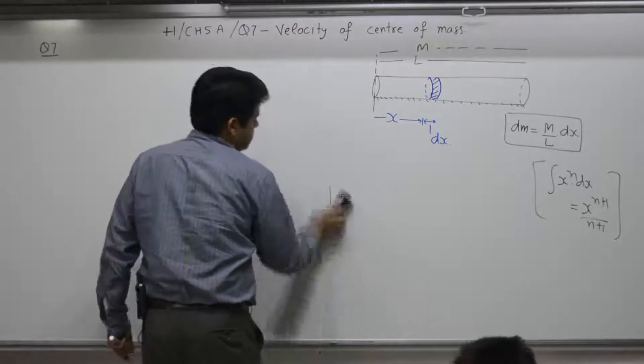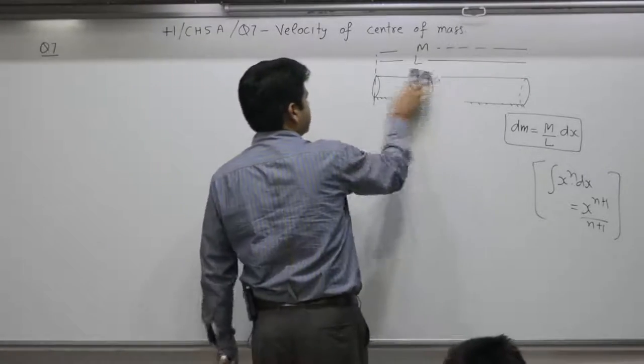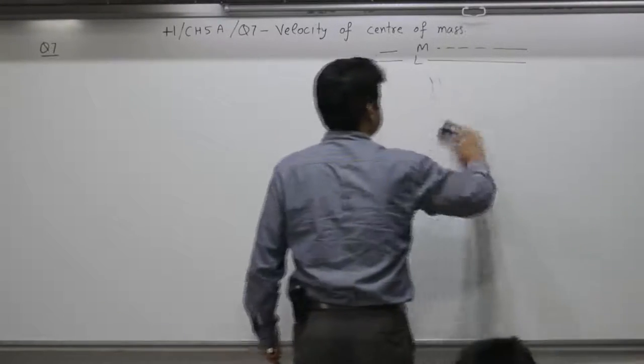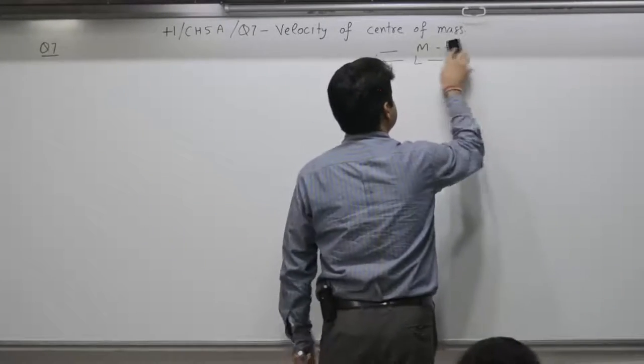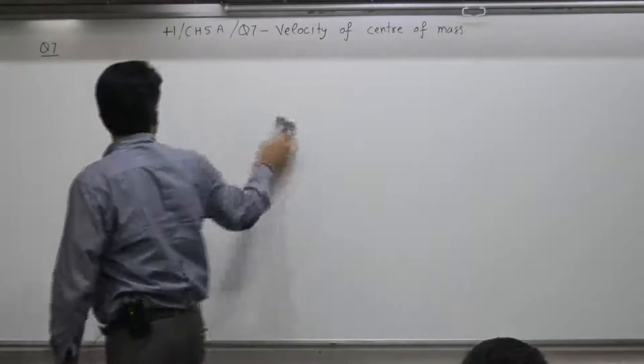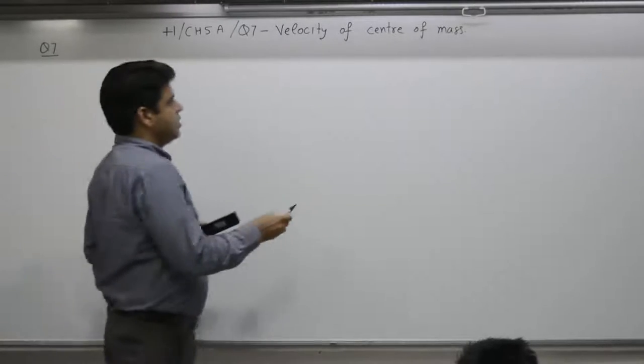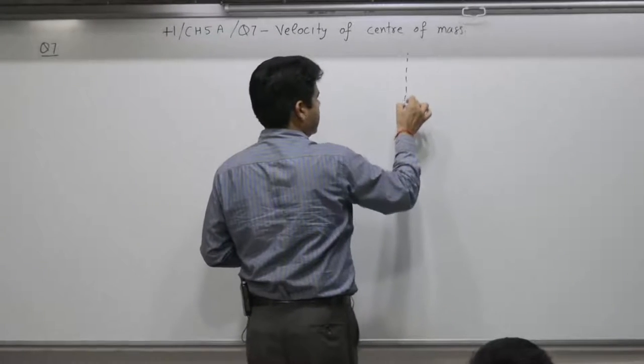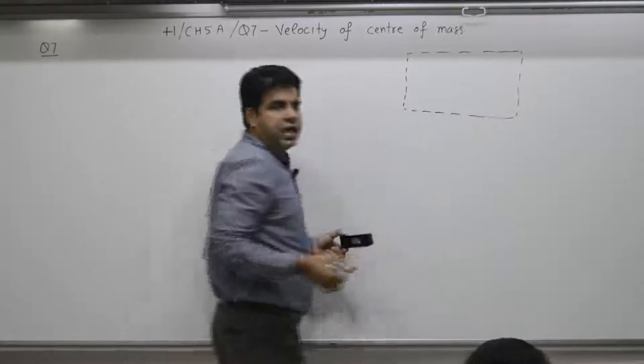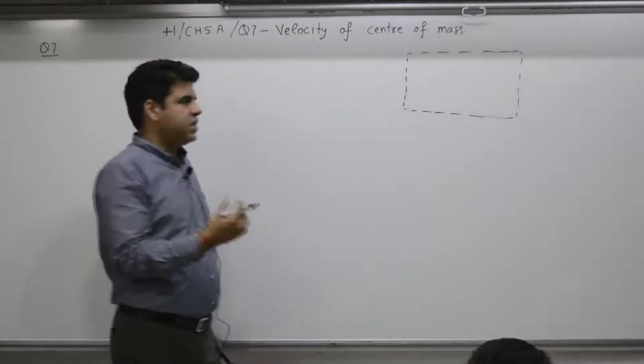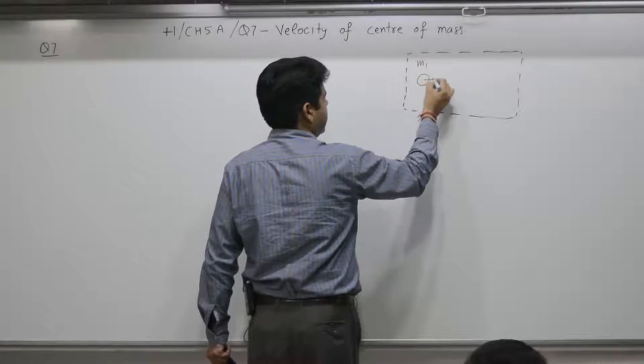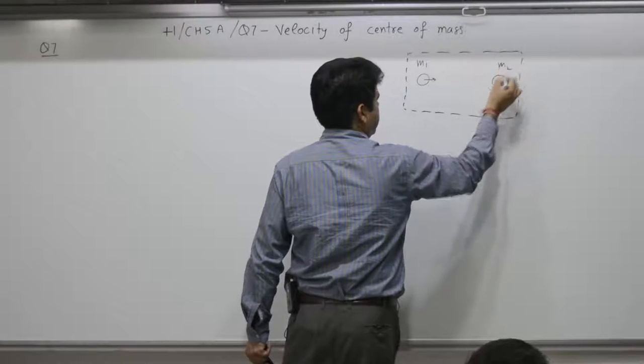First part: how many particles are marked in the diagram? Yes, two particles. Think of a system, a two particle system. It can be N particles, but for convenience two particles. One particle is mass M1, another particle is M2.